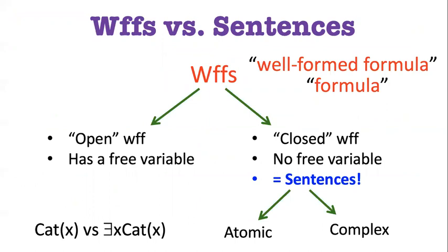Woofs have two varieties. What's the relation between woofs and sentences? Sentences are a type of woof, or a type of formula. When I say formula, I'm going to use that as short for well-formed formula. Because there's still something grammatically well-formed about open formulas. If I put cat X like this, this is still well-formed. It is a cat.